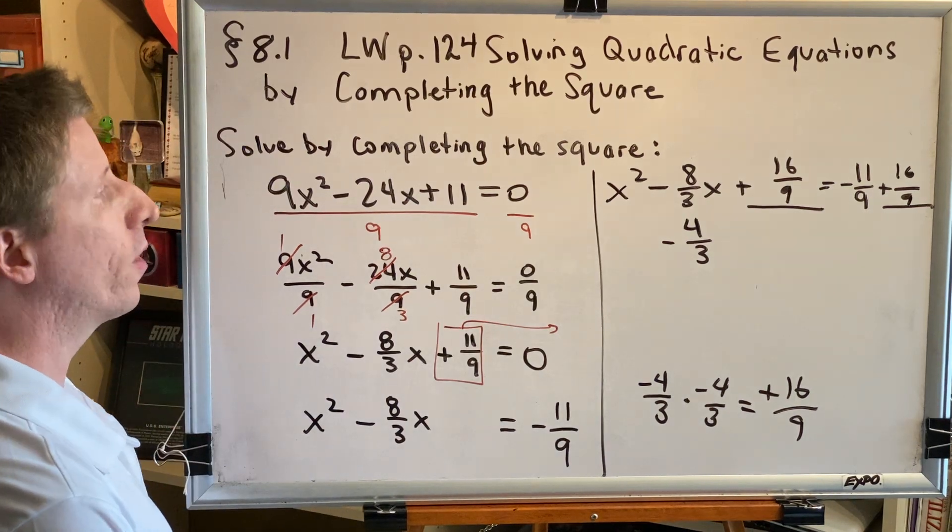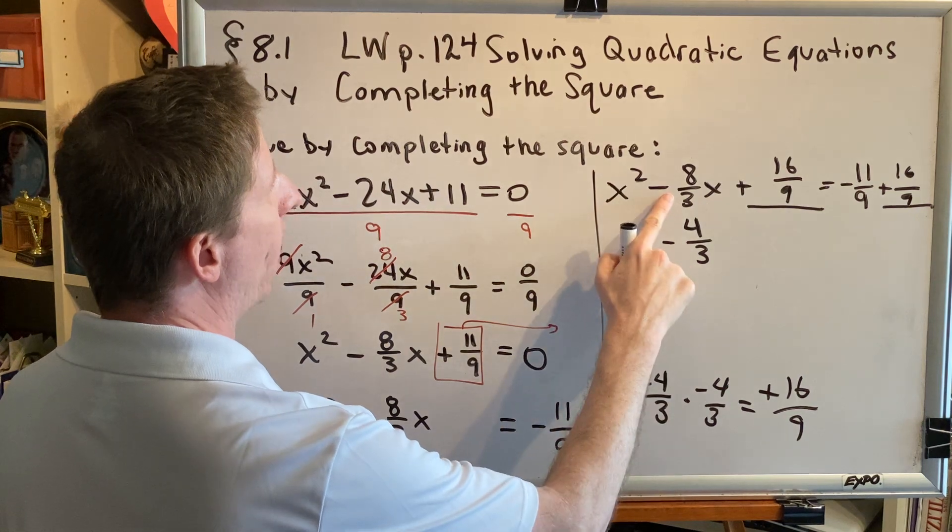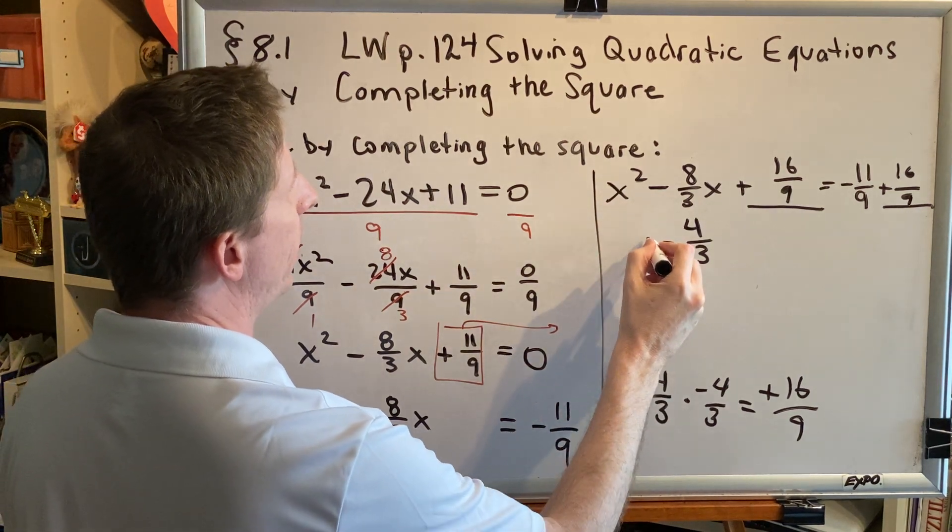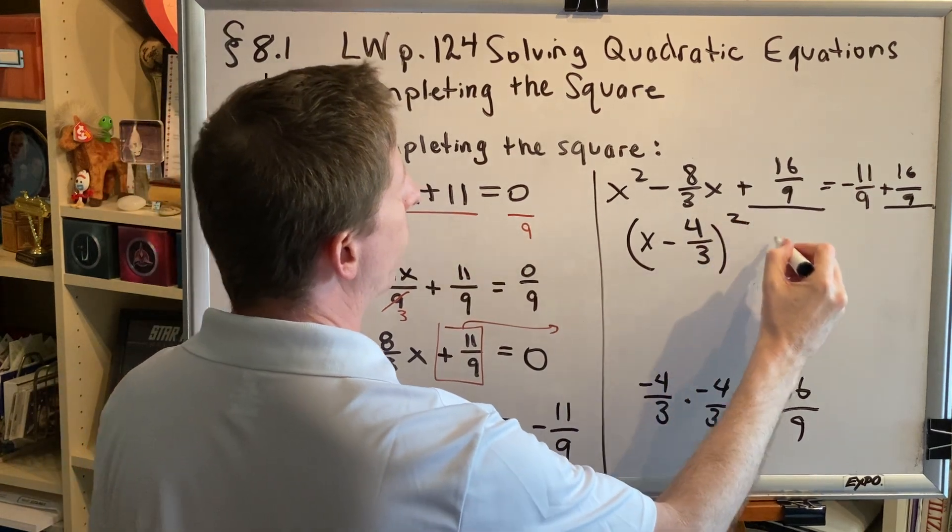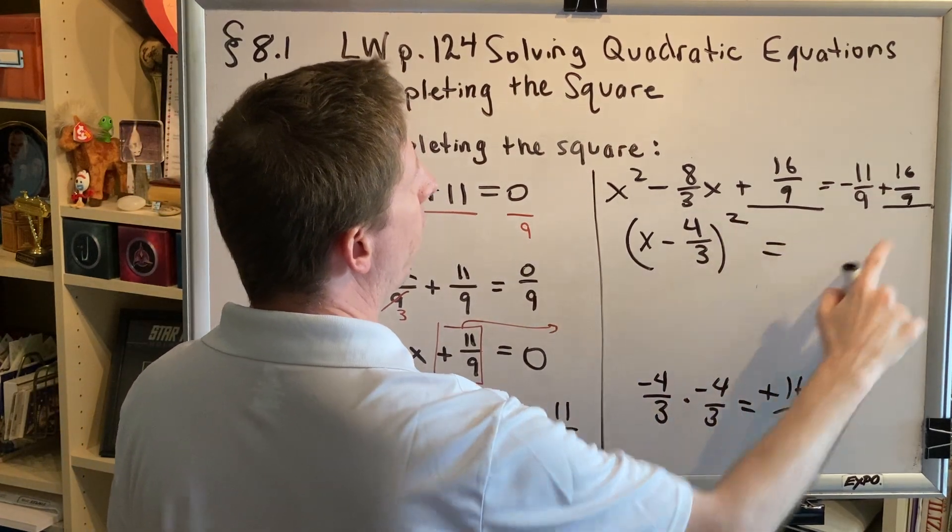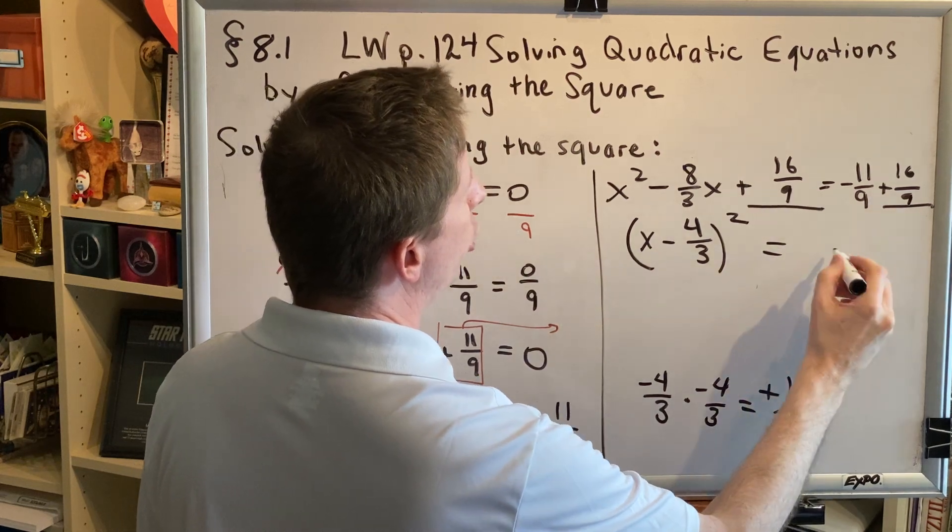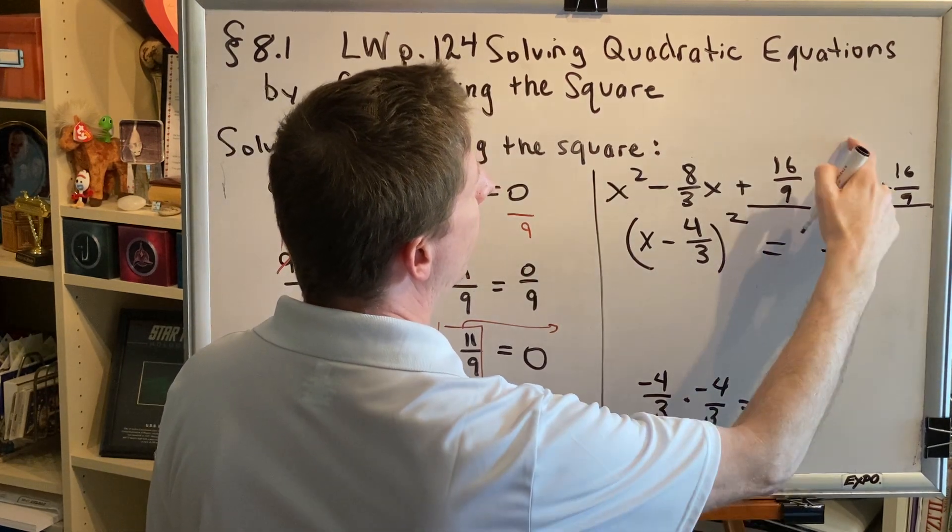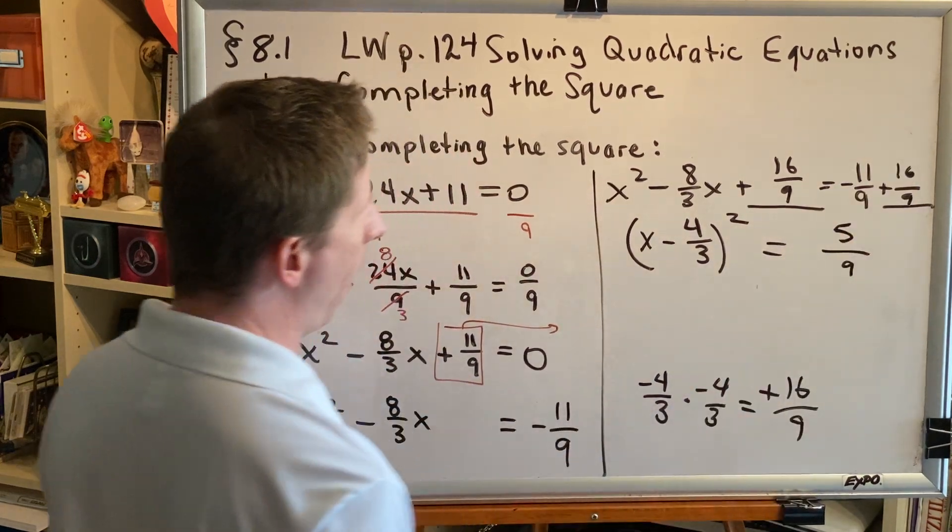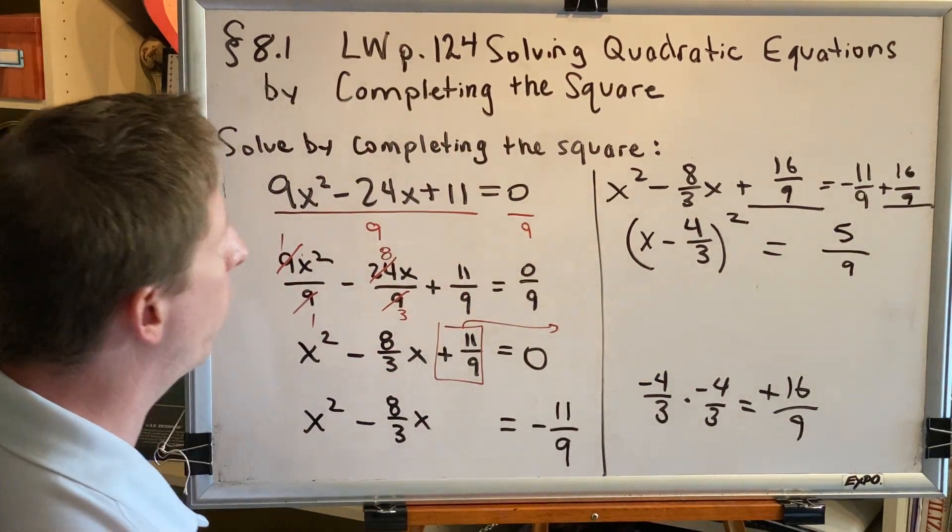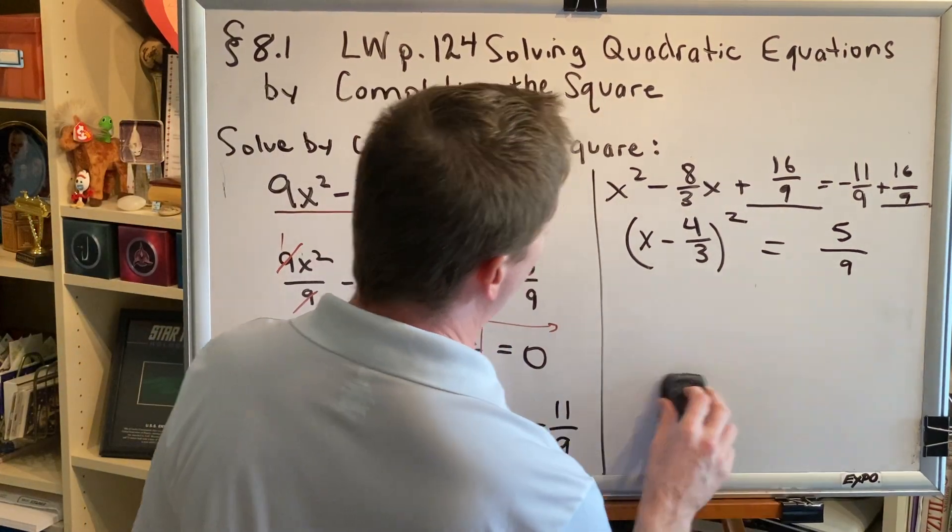Factor your trinomial. It may seem difficult with the fractions, but if you've been following my advice and putting the number here, when you cut this number in half, it actually makes it very easy. Just put your variable in front of that, put it in parentheses, and square it. Over here on the right side, when you add two fractions with the same denominator, you keep the common denominator and add your numerators. Negative 11 plus 16 is 5. So we get x minus 4 thirds, all in parentheses squared, equals 5 ninths.